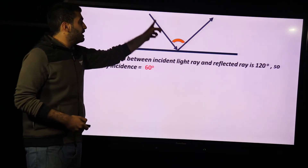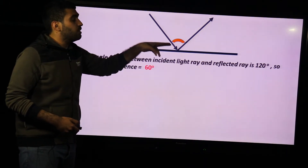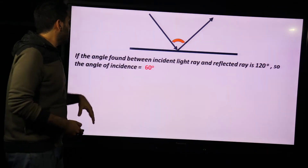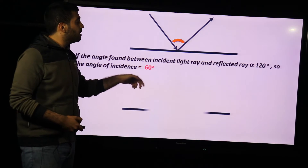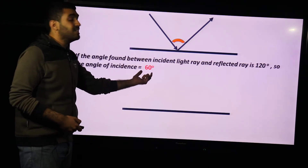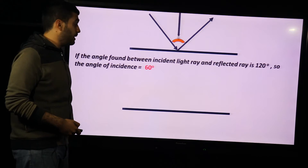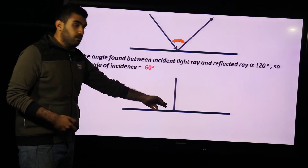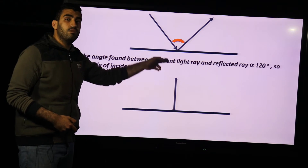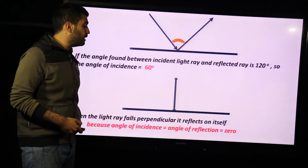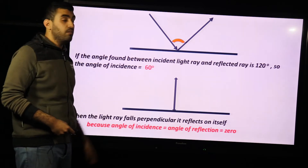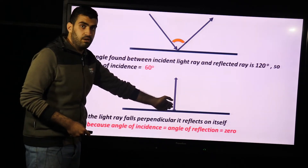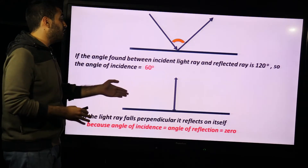If the angle found between the incident and reflected ray equals 120 degrees, then the angle of incidence equals 60 degrees, since the total is divided equally. When a light ray falls perpendicular to the reflecting surface, it will reflect back on itself — give reason: because the angle of incidence equals the angle of reflection equals zero, so there is no angle and it reflects on itself.